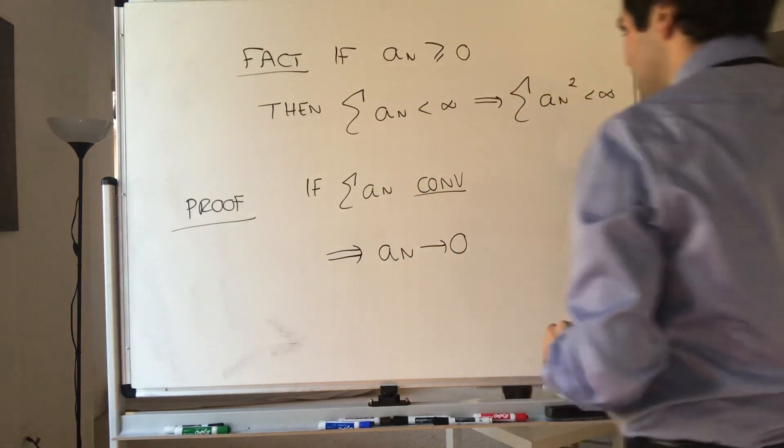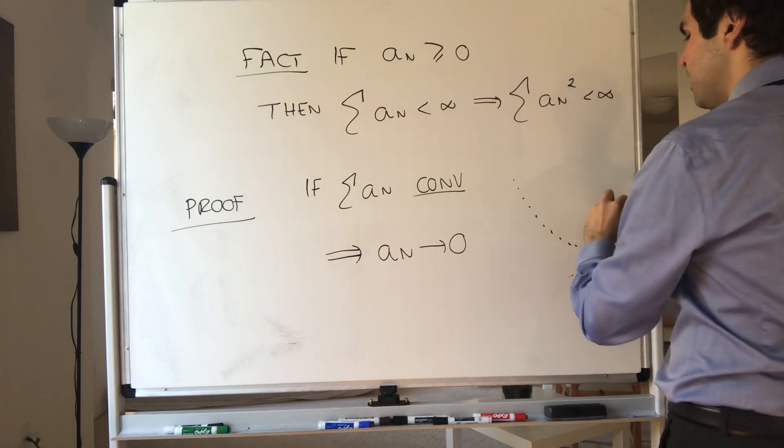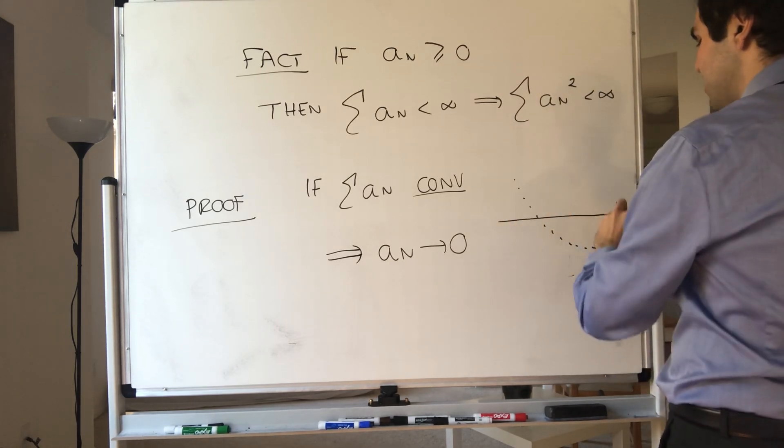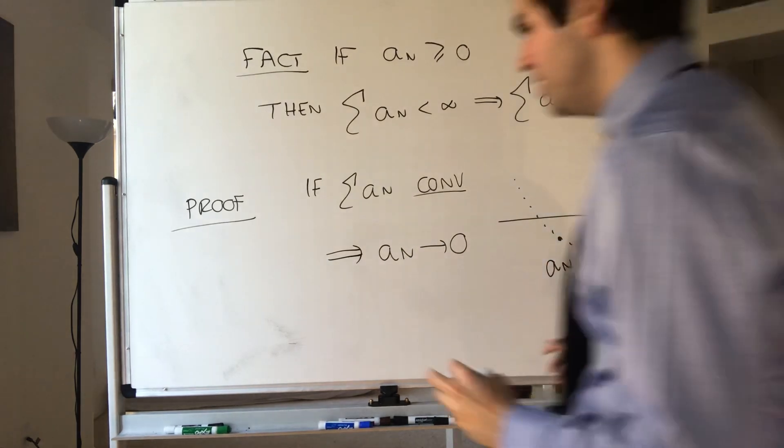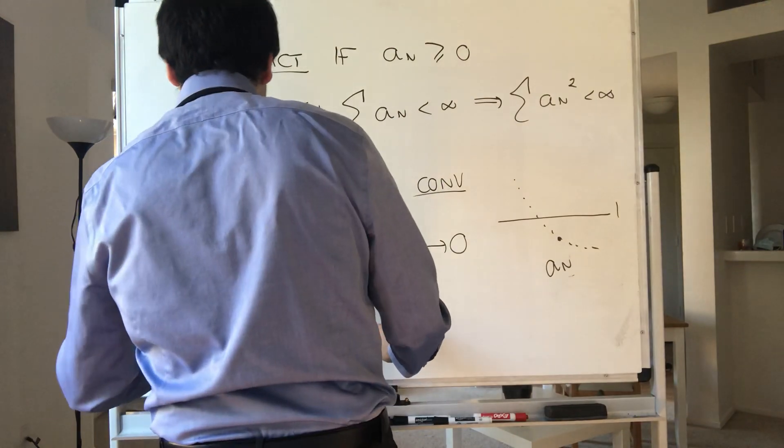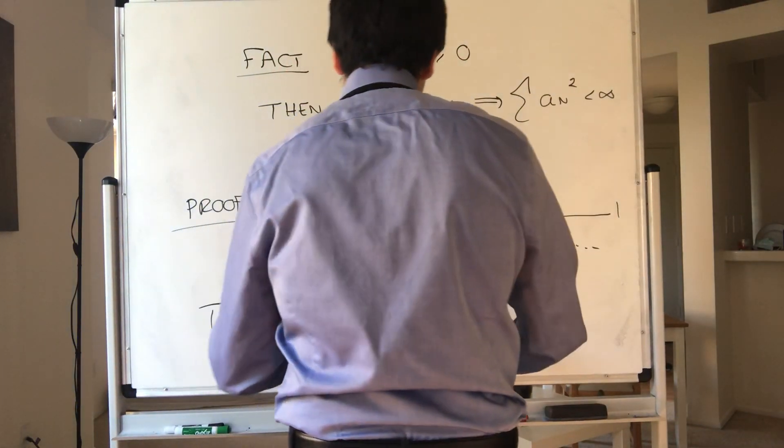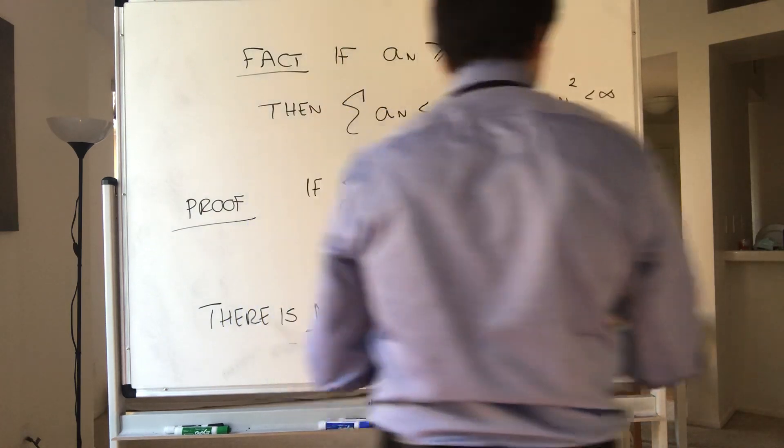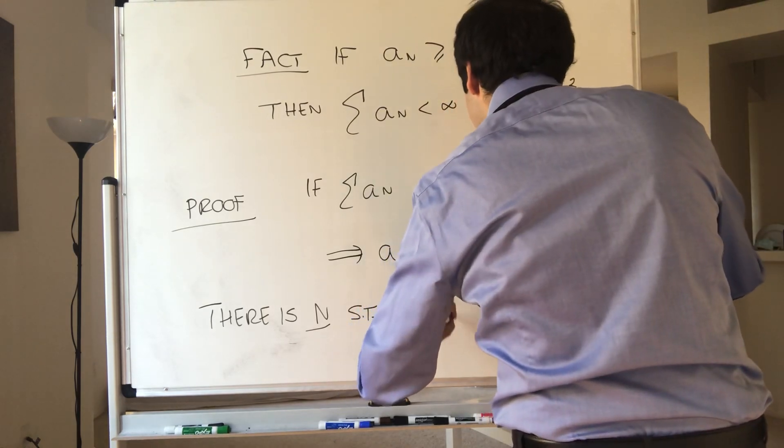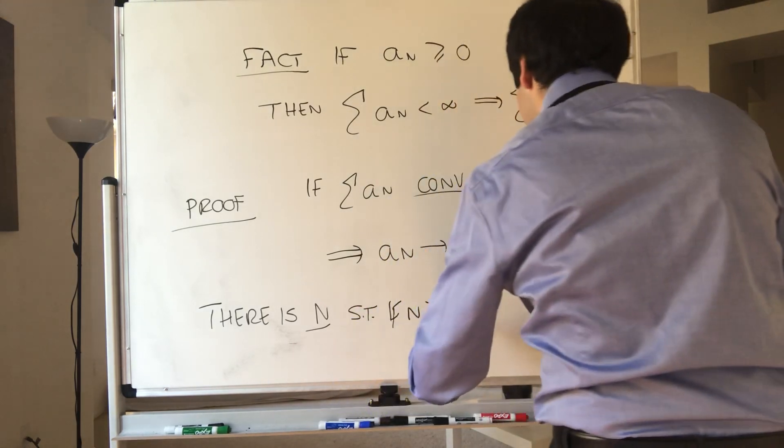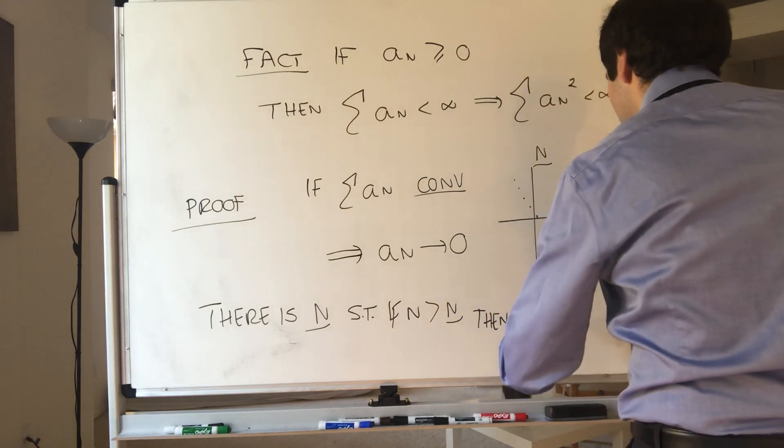However, if a sequence goes to zero, then eventually the sequence has to be less than one. So which means there is some threshold, capital N, such that after this threshold, if n is bigger than the threshold, then aₙ is less or equal to one.